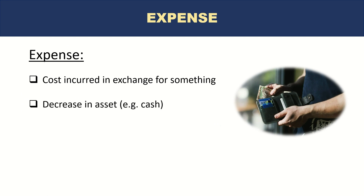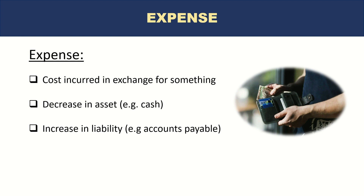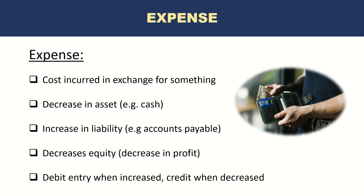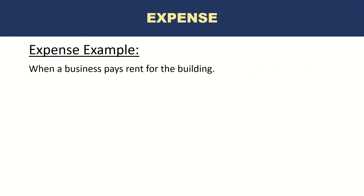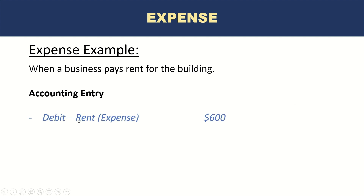Expenses are costs incurred in exchange for something. From the definition, an expense is a decrease in assets — for example, cash — so when you pay for something, the asset cash is reduced. It can also result in an increase in liability — for example, accounts payable — when the company purchases on credit. It results in a decrease in equity or profit and is recorded as a debit entry when increased, credit when decreased. Example: when a business pays rent, the entry is debit rent expense and credit cash.